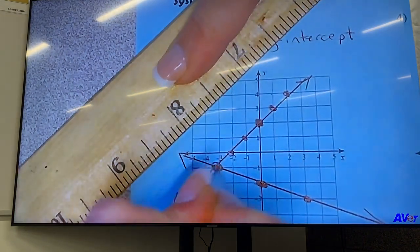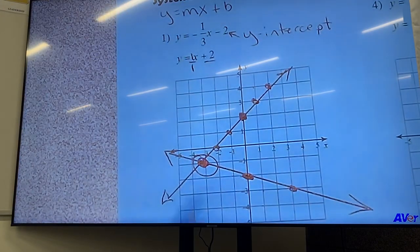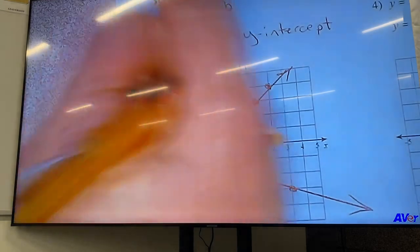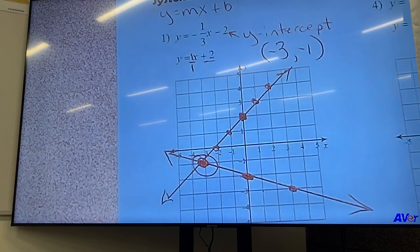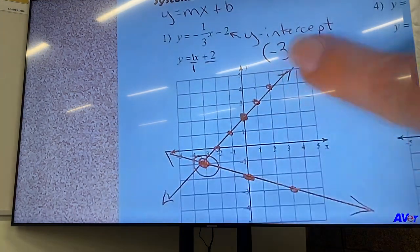And we can see these lines cross right there at one, two, three. So that's negative three, negative one, negative three and negative one. There is your first answer. So that's what we're looking for. The solution is where the lines cross.